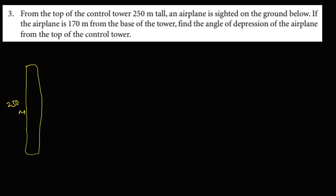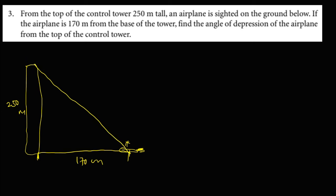For this given: from the top of the control tower, that's 250 meters tall. An airplane is located on the ground below. If the airplane is 170 meters from the base of the tower, find the angle of depression. Since angle of depression is always with the horizontal line, this is the angle of depression. Using the properties of the alternate interior angle, if this one is angle theta, therefore this angle is also angle theta.